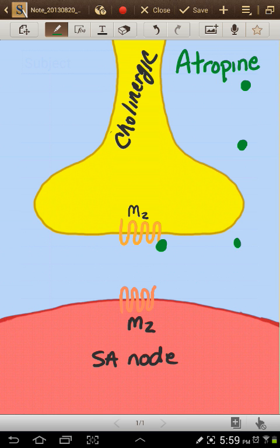So now we have a binding of the presynaptic M2 receptor right here with the atropine. And we have not bound the postsynaptic M2 receptor because it's a low dose.